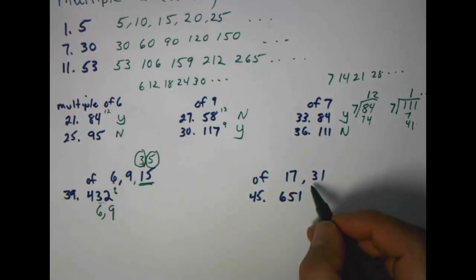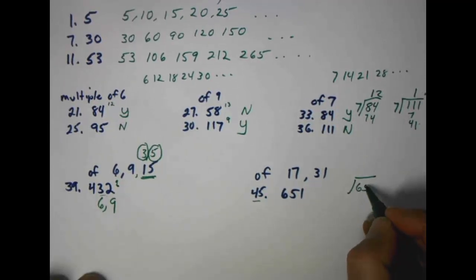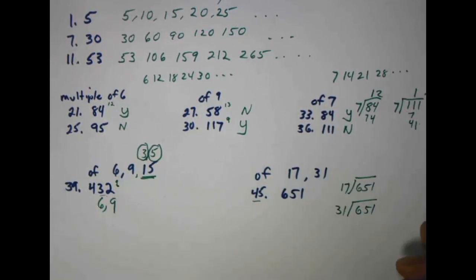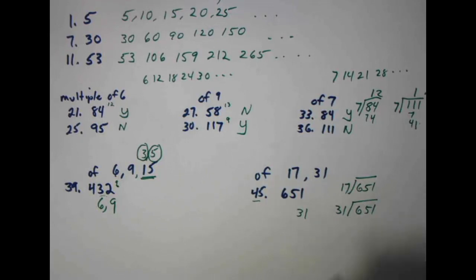Then they're going to get some really fun stuff, such as problem number forty-five. There's not a rule for seventeen and not a rule for thirty-one. So basically you're going to be doing it longhand or on a calculator. Just doing the math and checking. You'll find that it does not go in evenly for seventeen, but it will go in for thirty-one.